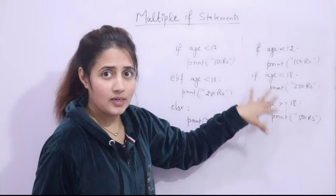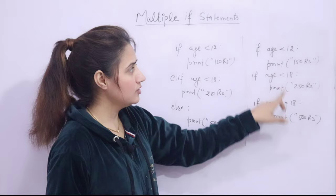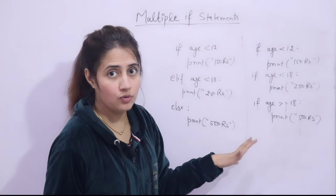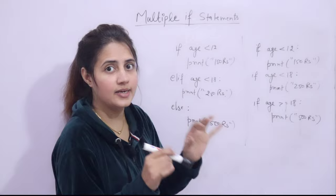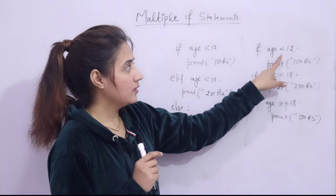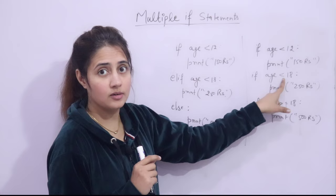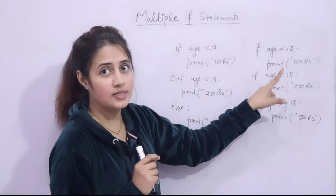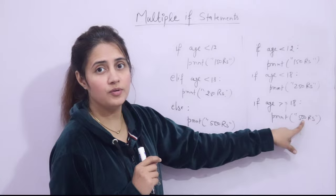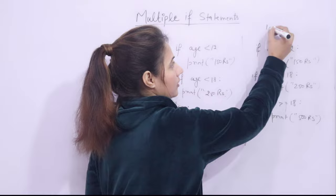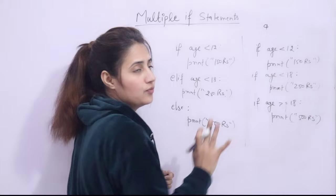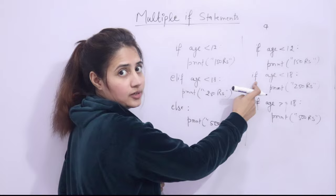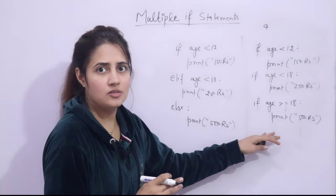One way to write those three conditions is using three separate if statements. If I enter height as 6 feet and age as 19, it checks: is age less than 12? No. Is age less than 18? No. Is age greater than or equal to 18? Yes — pay 500 rupees. But if age is 9, the first condition is true, yet the control still goes on to check all three conditions — this is not efficient.